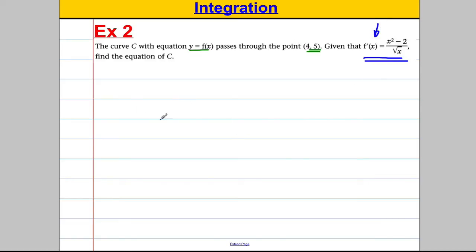Let's start off by integrating this. So f dash x is equal to x squared, take away 2 over square root x. To find f of x, they want the equation of c, that is f of x. We integrate this side with respect to x, and we integrate this side with respect to x. If we integrate the left, we get f of x, the equation of the curve, that's what we want.